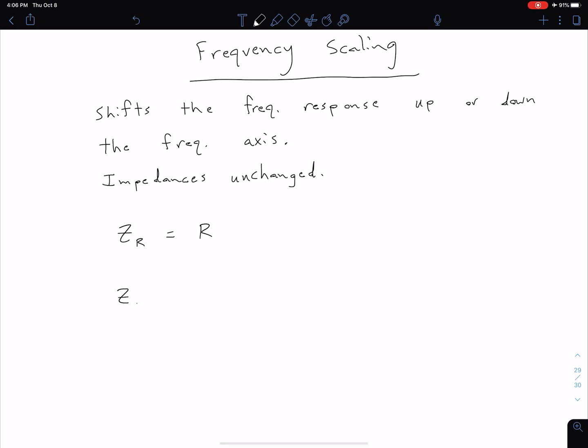For our inductance, we do have frequency dependence. We have j omega L, but now we're going to scale this frequency by some factor kf, and we need a new inductance L' such that our impedance is unchanged. We want this impedance ZL